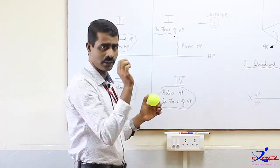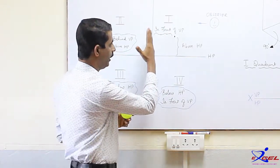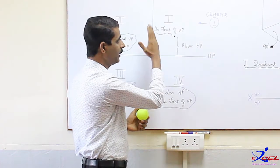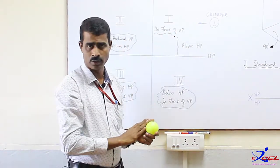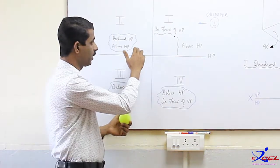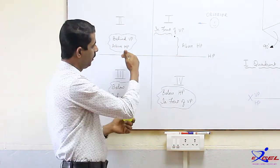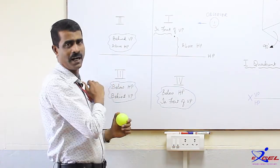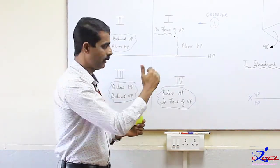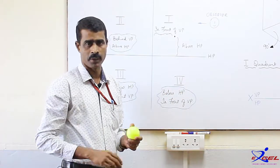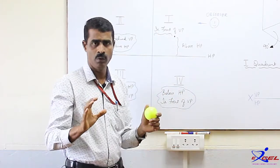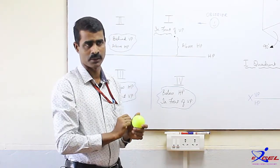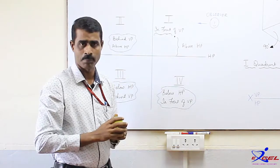We describe it such that it is above HP and in front of VP because the observer is on the right-hand side — the point is in front of the vertical plane and above the horizontal plane. For the second quadrant, it is behind VP but above HP. For the third quadrant, it is below HP and behind VP. For the fourth quadrant, it is below HP and in front of VP. First, we need to know the location of points in 4 different quadrants and how they are specified.